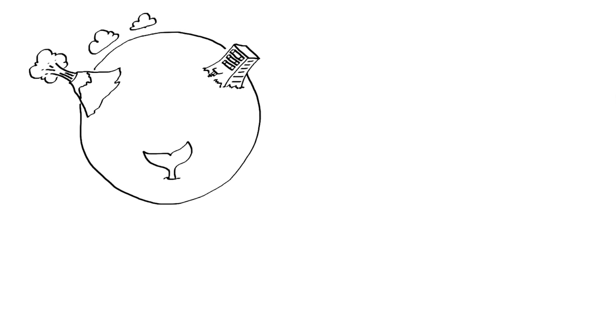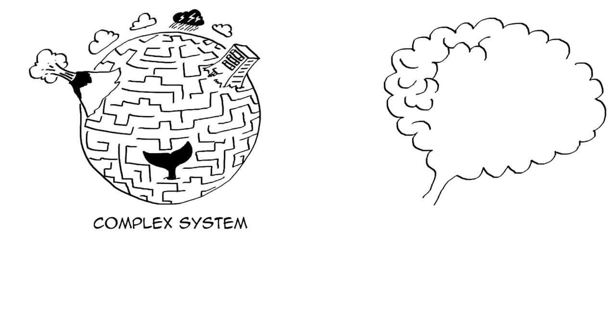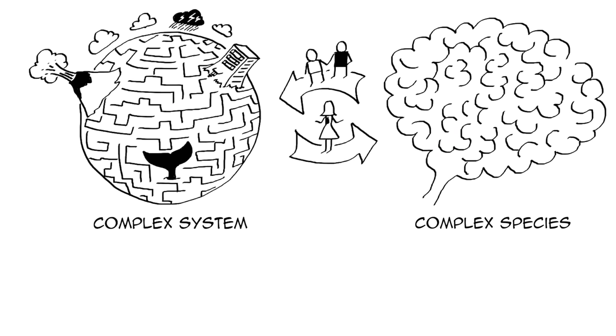Hi, Alex here. Our world is a complex system. We are a complex system, a complex species, interacting with each other and our complex environment. For all this to work well in a balanced and sustainable way, we need to be able to plan in complex systems.